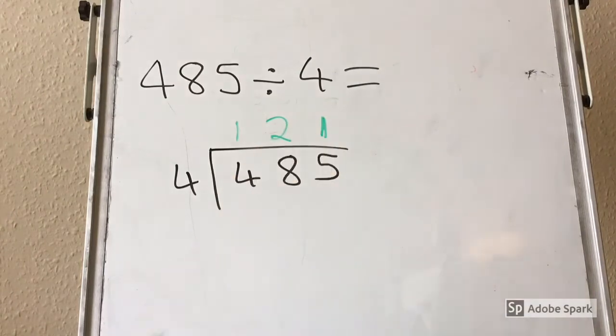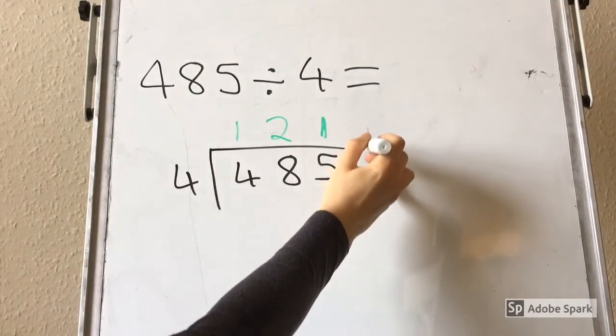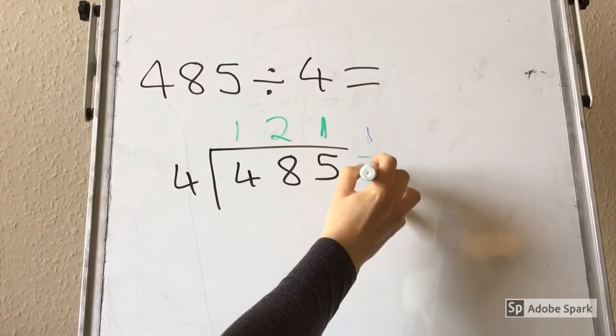In this example, our remainder is 1, so we have 1 quarter left over. Can you have a go at working out what this would be as a decimal?